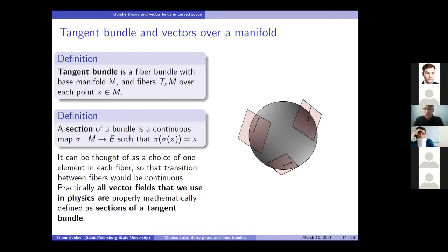And it turns out that all of the vector fields that we use in physics are properly mathematically defined as sections of a tangent bundle. Why is it important? Well, because it tells you that in each point a vector field lives in its own space. And you cannot simply give arbitrary vector fields in, for example, some curved manifold. You have to take into account that in each point vector fields live in its own space.